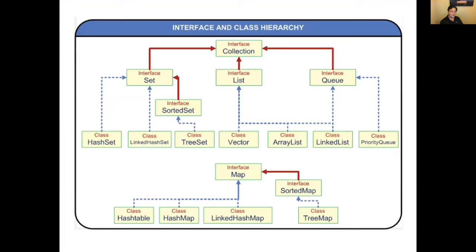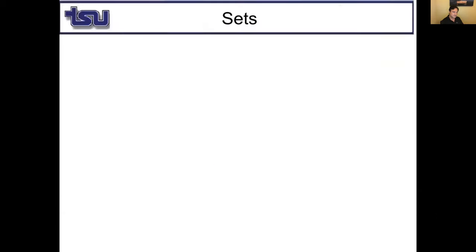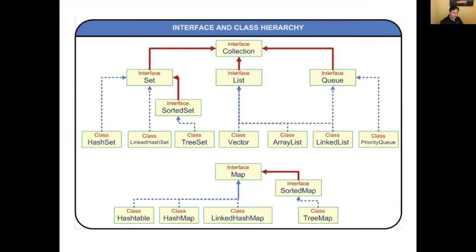Now the Set interface: HashSet, LinkedHashSet, and TreeSet. TreeSet implements SortedSet — so elements in TreeSet will be sorted, while HashSet and LinkedHashSet are not sorted. Since they're all sets, none of them allow duplicate elements. Set does not define any new methods beyond Collection, but adds the restriction of no duplicates.